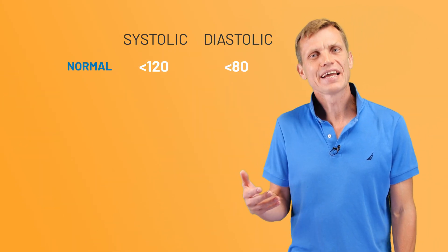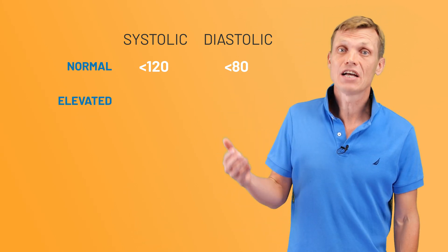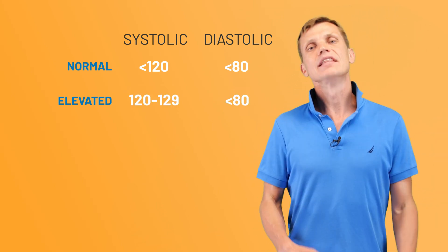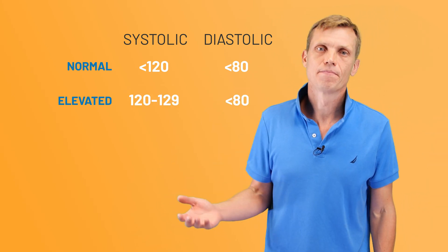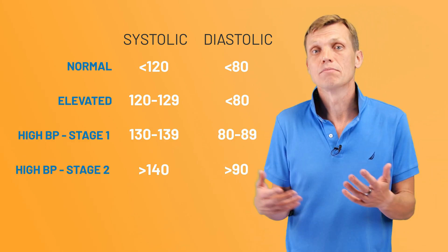120 over 80 blood pressure is considered normal. But if either systolic blood pressure is above 120 or diastolic blood pressure is above 80, blood pressure is considered elevated or high. And the risk of negative health effects increases.